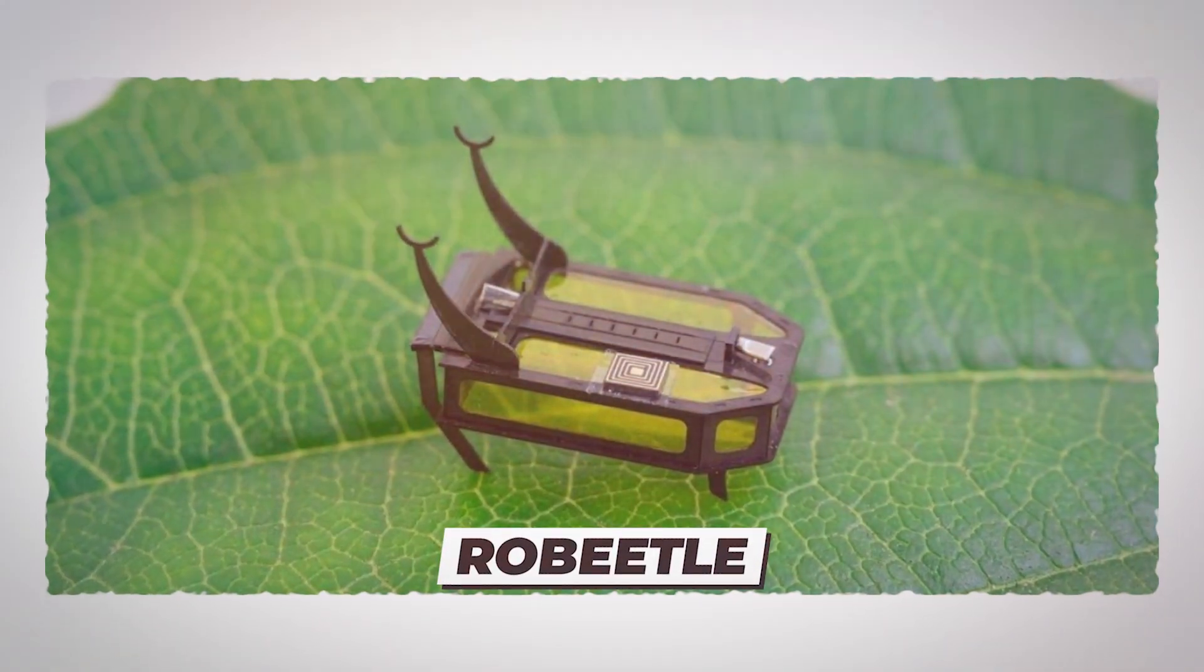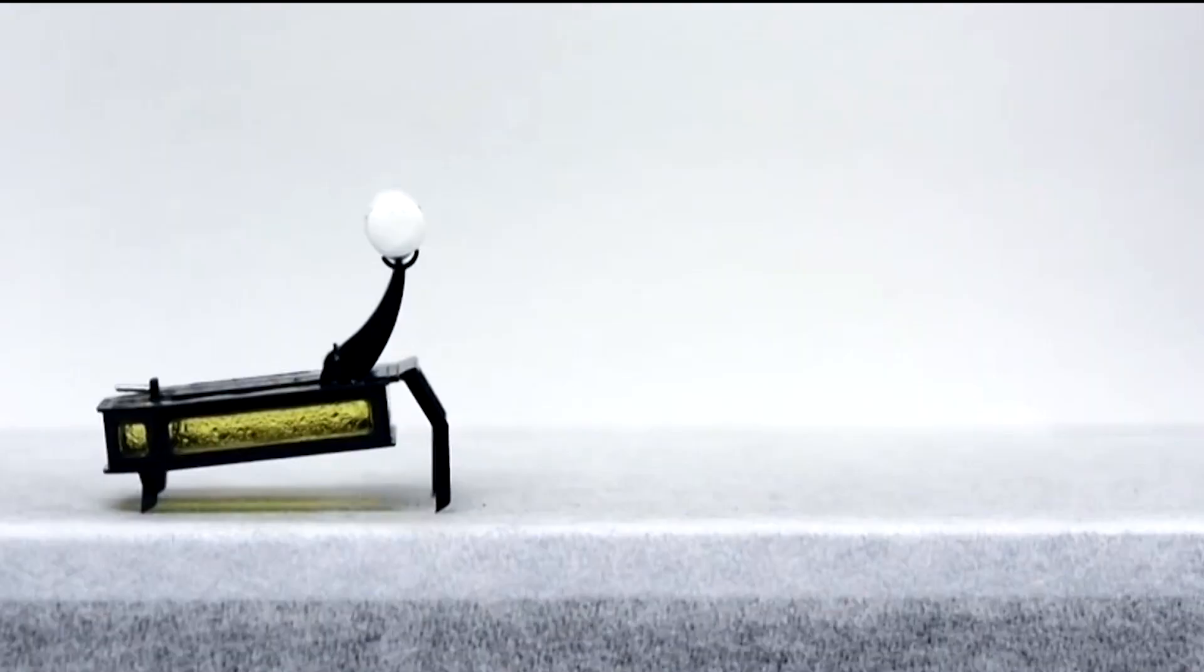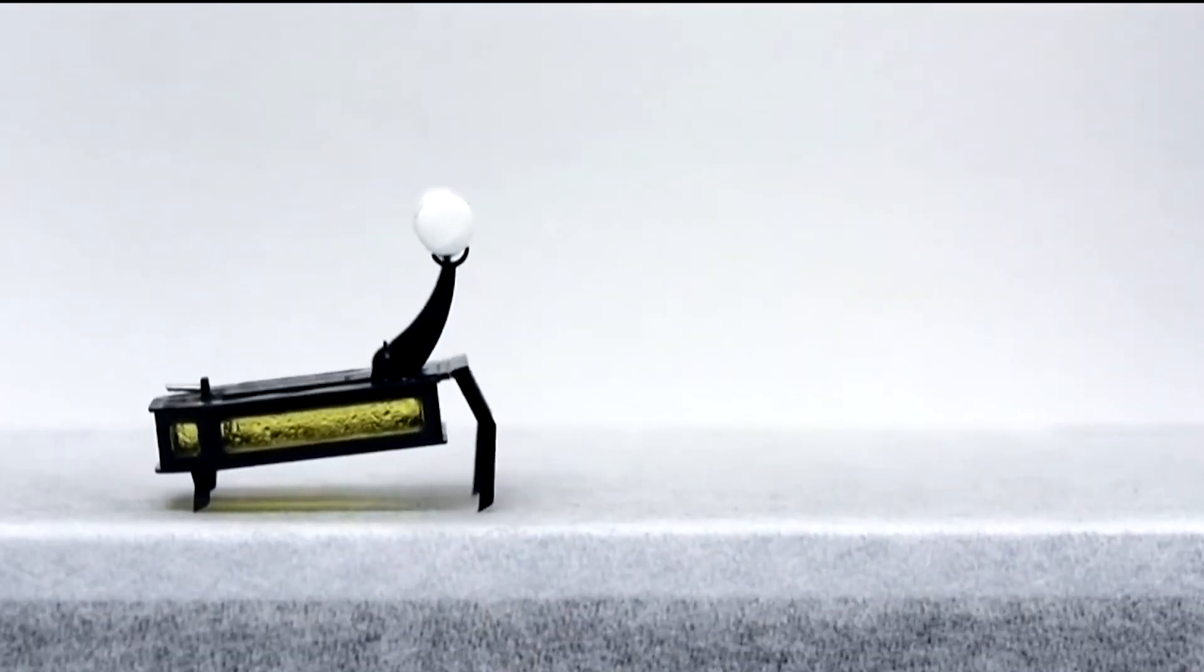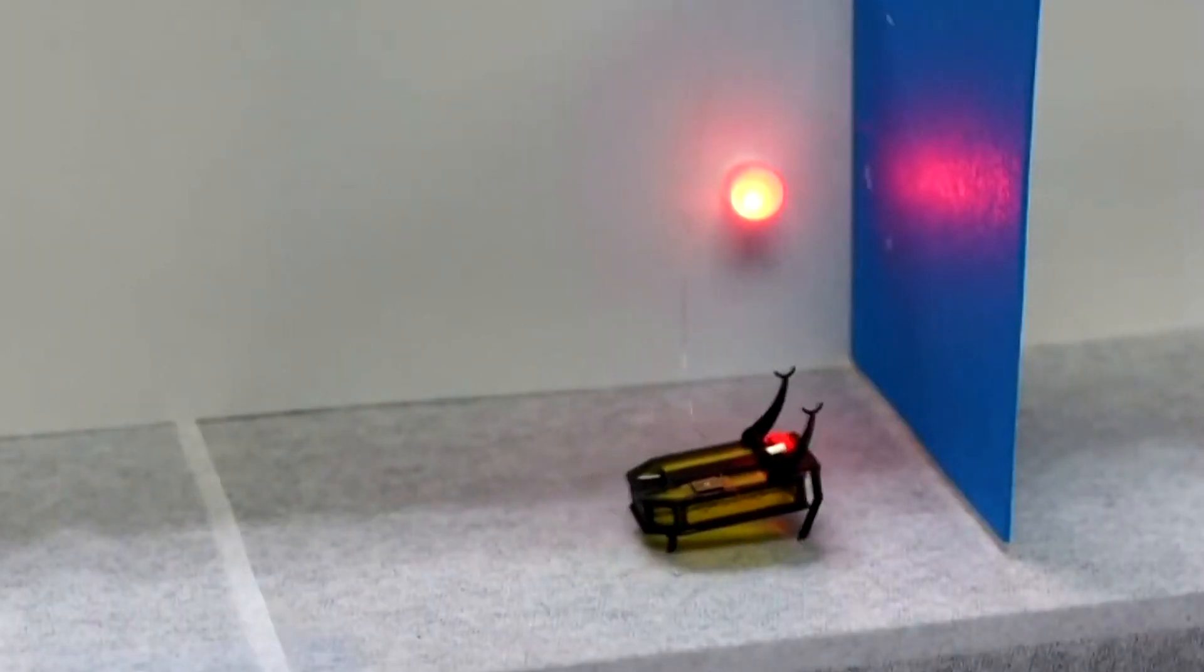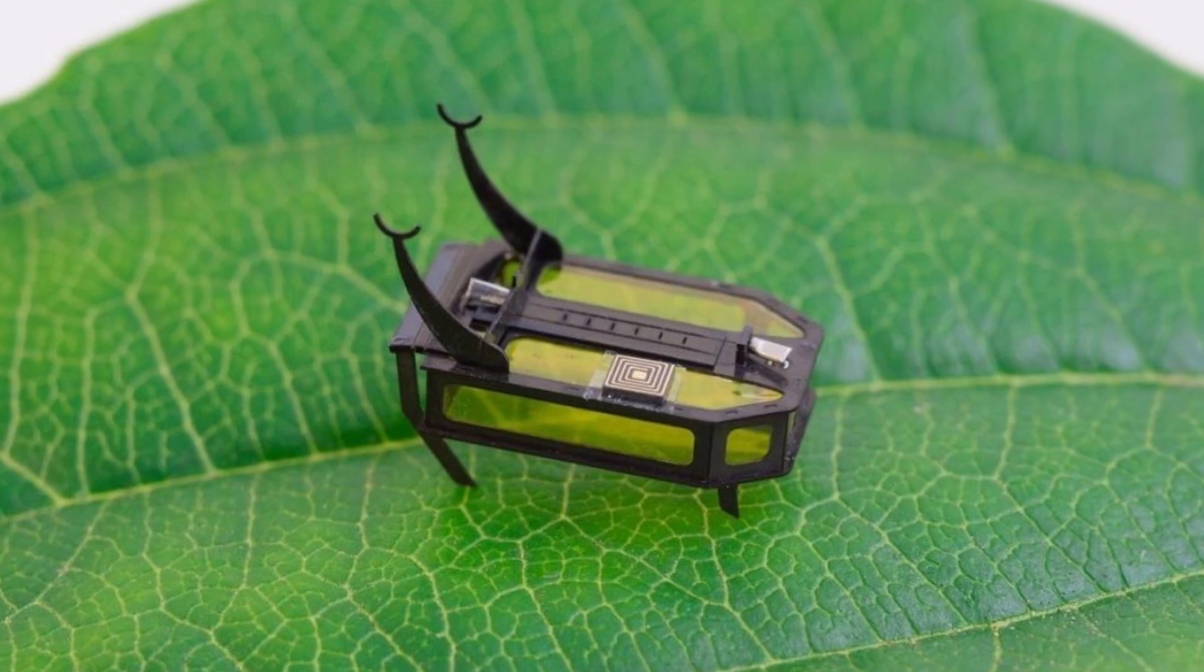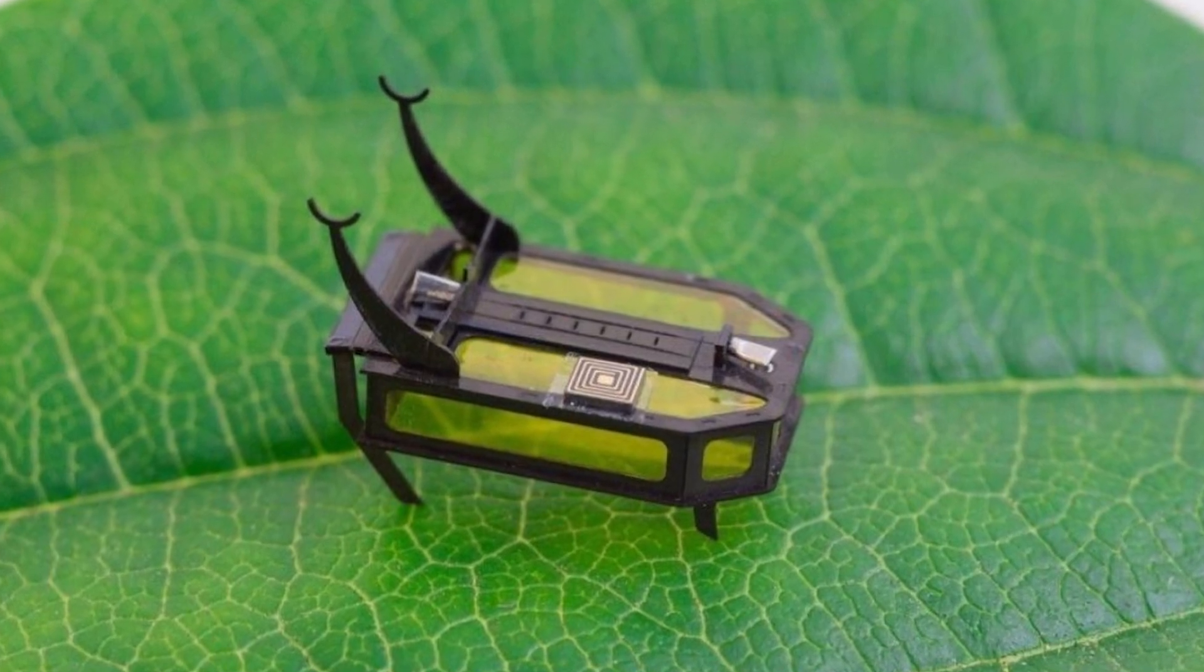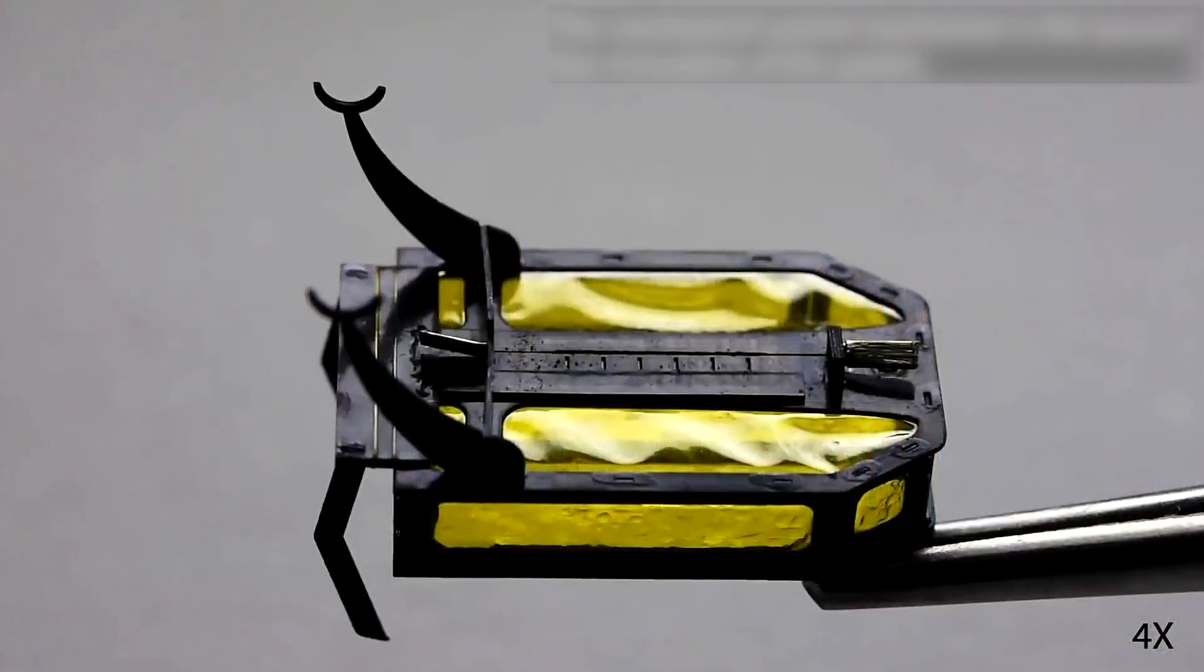Number 8. Robeetle. Officially declared the world's smallest crawling robot by Guinness World Records, Robeetle was developed at Washington State University. It weighs about 88 milligrams, approximately equivalent to three grains of rice, and almost as heavy as a real beetle.